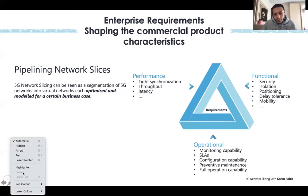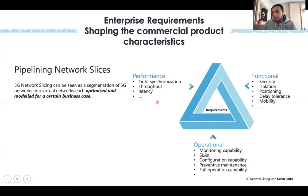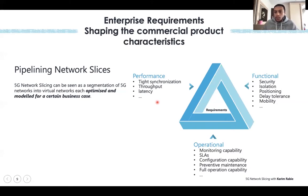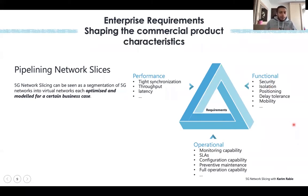In terms of performance, a certain customer might ask for an ultra-low latency slice — for example, one millisecond or two milliseconds — with a huge throughput. That's a performance requirement. In terms of mobility, an enterprise may want employees to move between slices or across the broader CSP network.